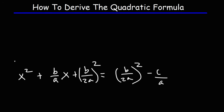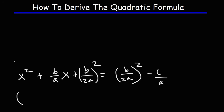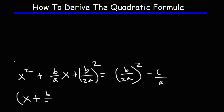Now we need to factor the perfect square trinomial on the left side. A quick and simple way to factor a perfect square trinomial: it's going to be x, plus whatever sign you see, plus b over 2a, all squared. So it becomes (x + b/2a) squared. On the right side we can square that term, so b squared over (2a) squared gives us b squared over 4a squared.